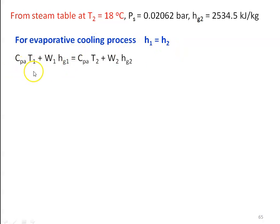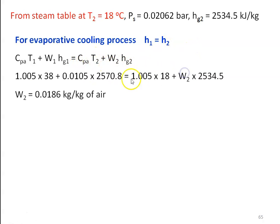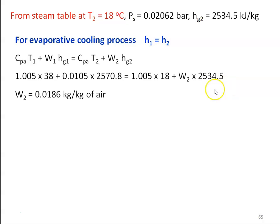From the steam table at 18 degree Celsius, the saturation pressure PS2 equal to 0.02062 bar and HG2 equal to 2534.5 kilojoules per kilogram. For the evaporative cooling process, H1 equal to H2. So H1 is Cpa×T1 plus W1×HG1 and H2 equal to Cpa×T2 plus W2×HG2. Substituting numerical values: 1.005×38 plus 0.0105×2570.8 equal to 1.005×18 plus W2×2534.5. Solving this equation, W2 equal to 0.0186 kg per kg of air.